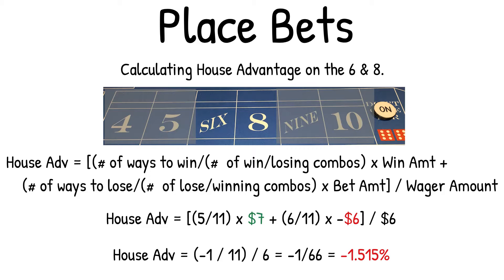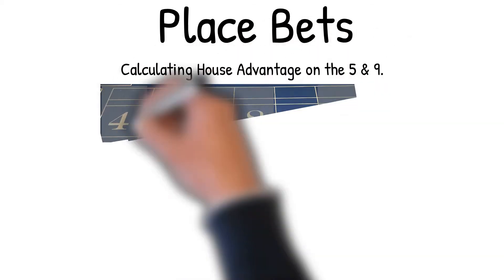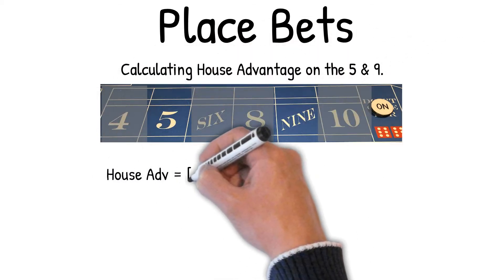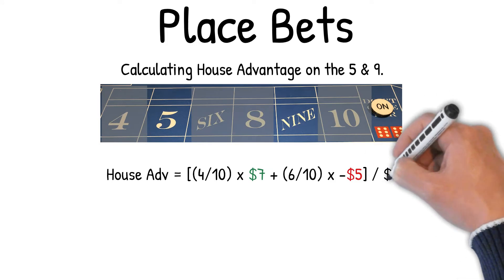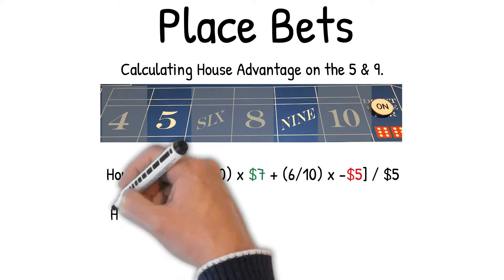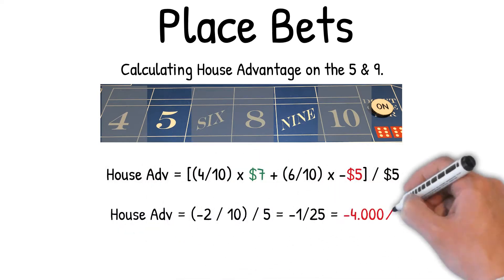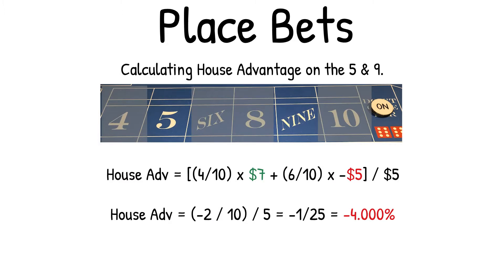Calculating house advantage on the five and nine. House advantage equals: 4/10 × $7 + 6/10 × (−$5), over $5. This equals (−2/10) / (1/5) / 5, which equals −1/25, which equals −4% house advantage.